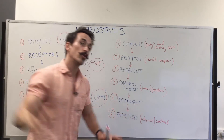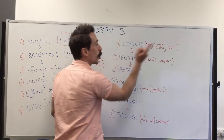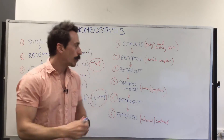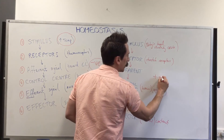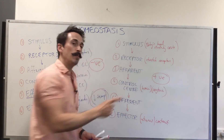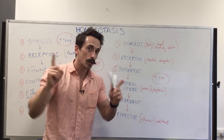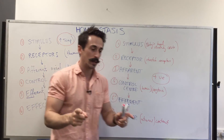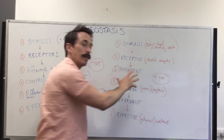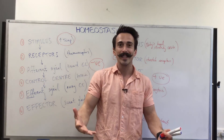Ultimately, with these uterine contractions, the baby will be pushed straight out. That means there's no longer any stretch and none of this happens — it stops. So positive feedback, where the effector amplifies the stimulus, is a very short-term homeostasis feedback mechanism. Negative feedback negates the stimulus. And that's a quick run through of homeostasis.